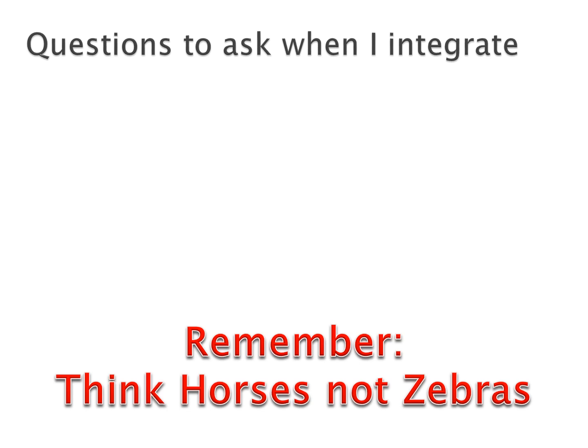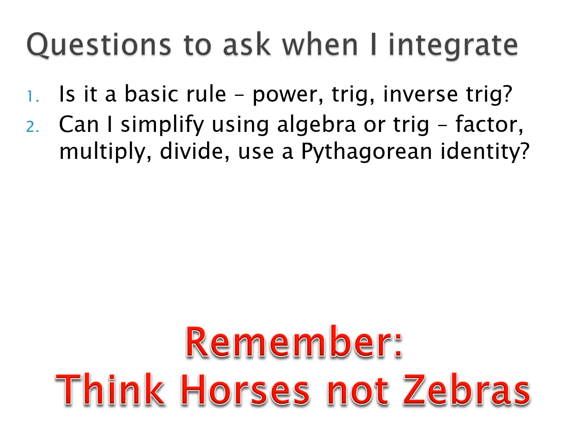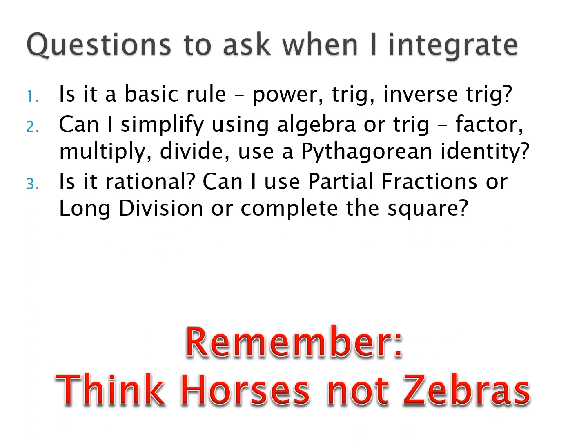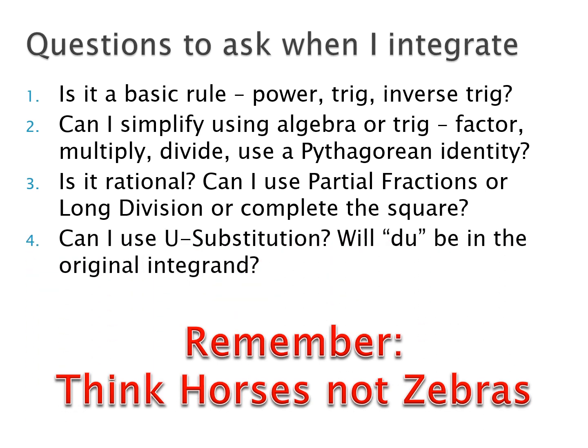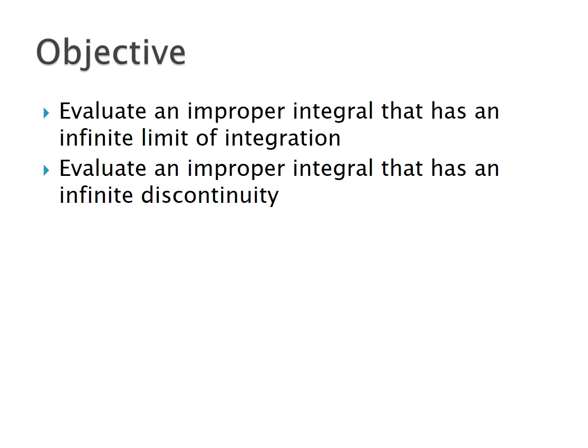Today we're going to look at improper integrals, but first let's review what we've learned. When we get ready to integrate, we ask: is it a basic rule — power rule, trig rule, or inverse trig? Can I simplify by factoring, multiplying, dividing, or using a Pythagorean identity? Is it rational — can I use partial fractions, long division, or complete the square? Can I use u-substitution? And when all else fails, use integration by parts. Remember: horses, not zebras — the simplest solution is generally best.